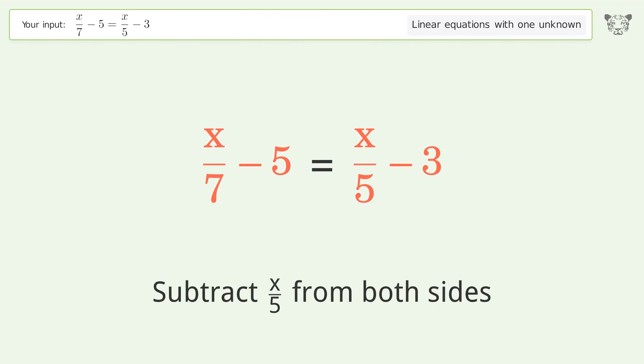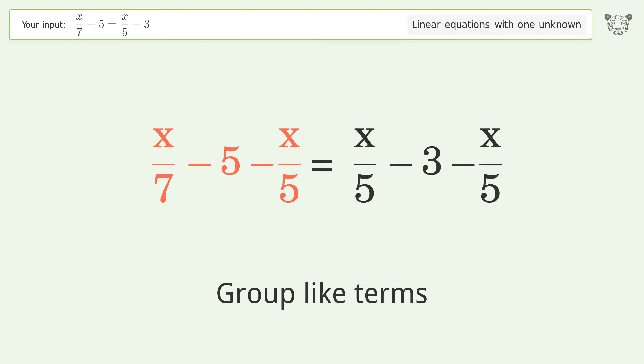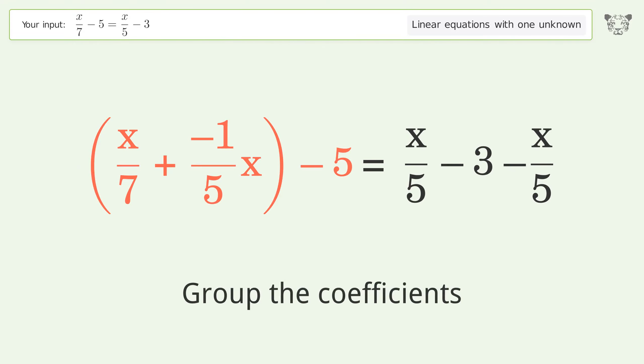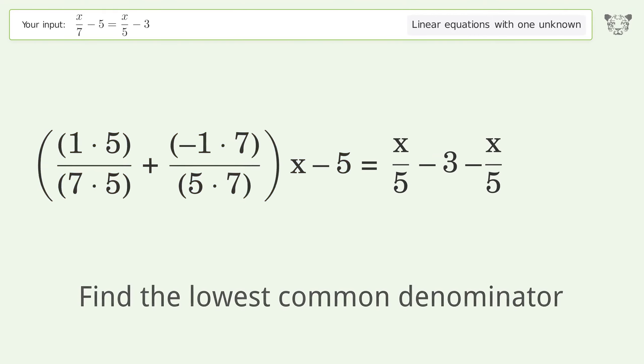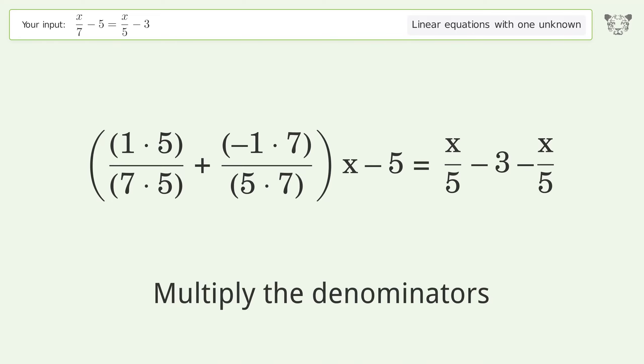Subtract x over 5 from both sides. Group like terms. Group the coefficients. Find the lowest common denominator. Multiply the denominators.